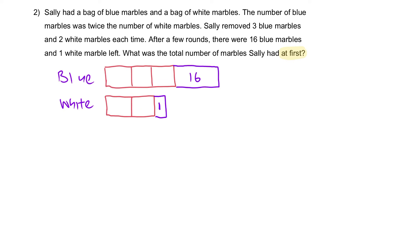So this is the model at first. What other information have we not talked about? The very first information: the number of blue marbles was twice the number of white marbles at first. Twice. This is twice of white.